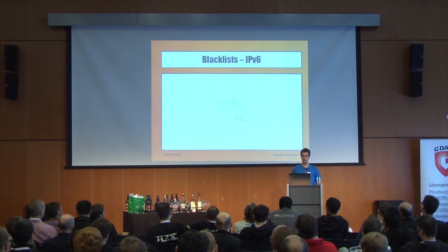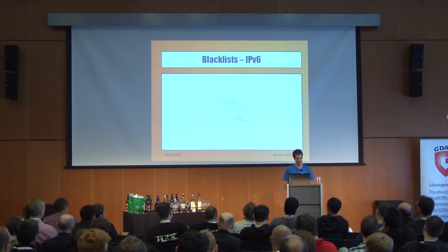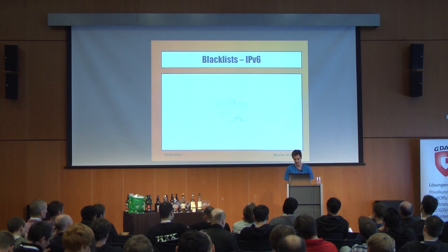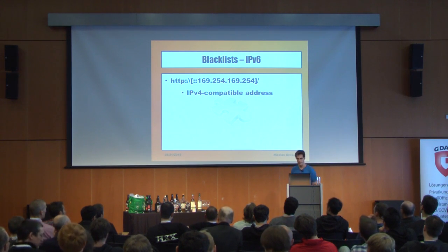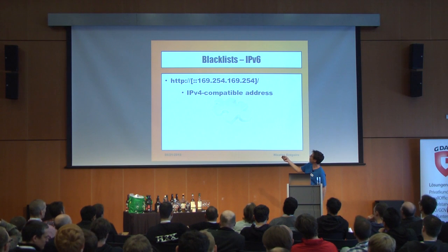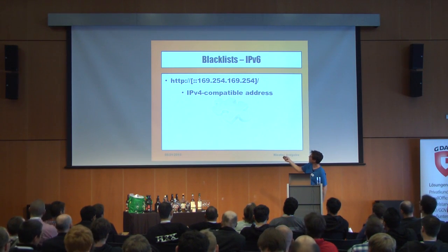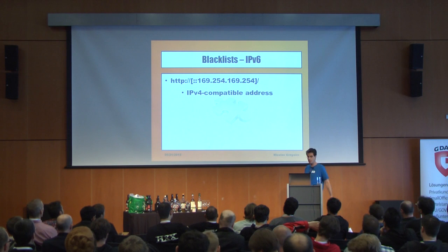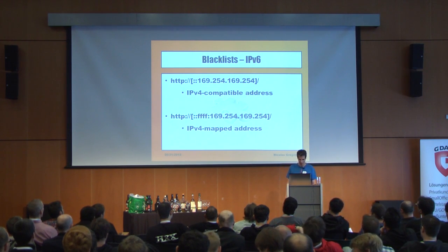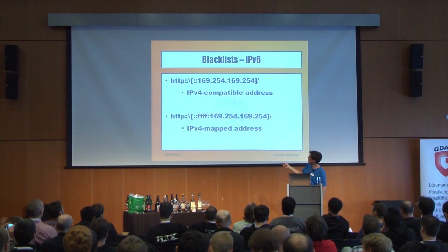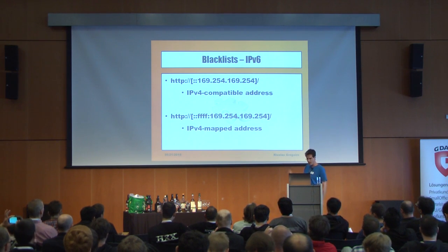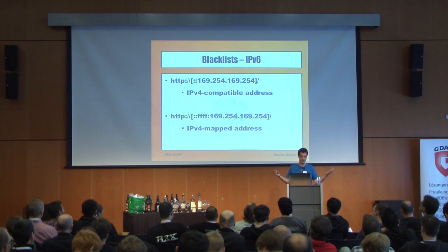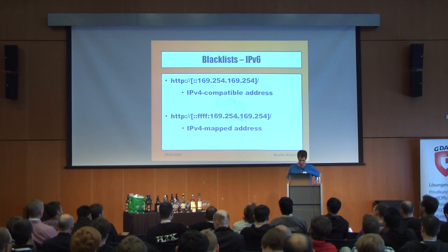IPv6: most of the time your target operating system has IPv6 enabled — maybe not in use, but the interface exists. You have specific formats: square brackets for IPv6 addresses, and you can prefix with double-colon for an IPv4-compatible IPv6 address. Or you can put double-colon, 4f, and another colon for an IPv4-mapped address. It's not very common, but if it works once per year it's enough.